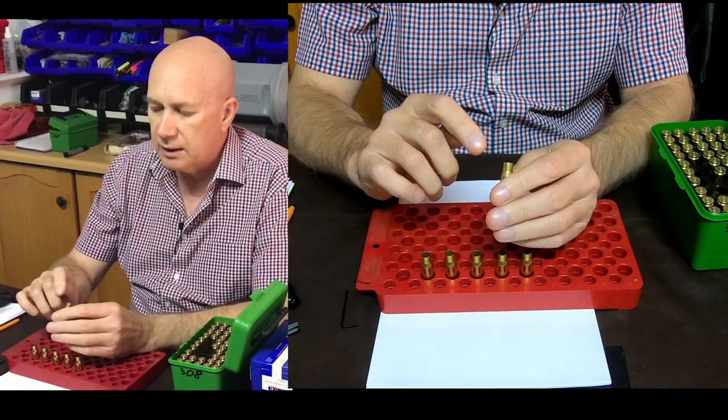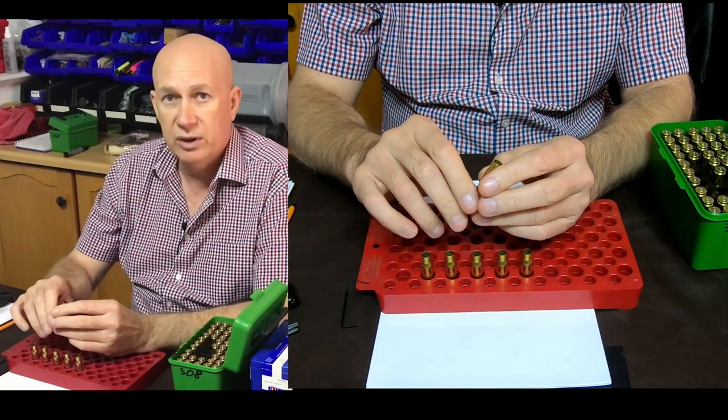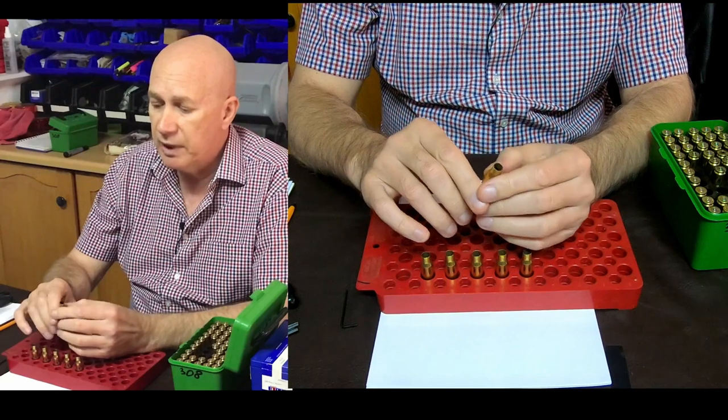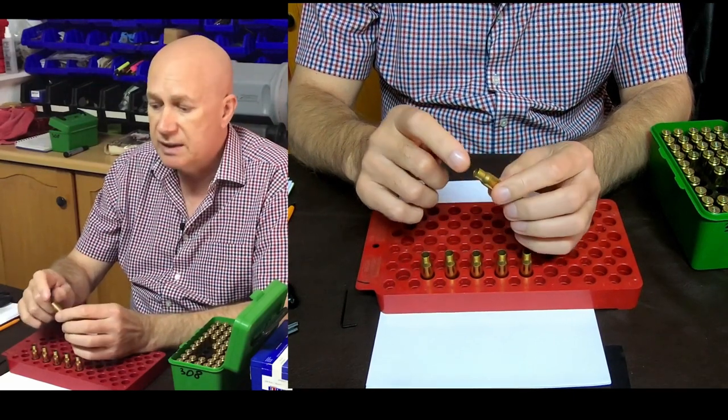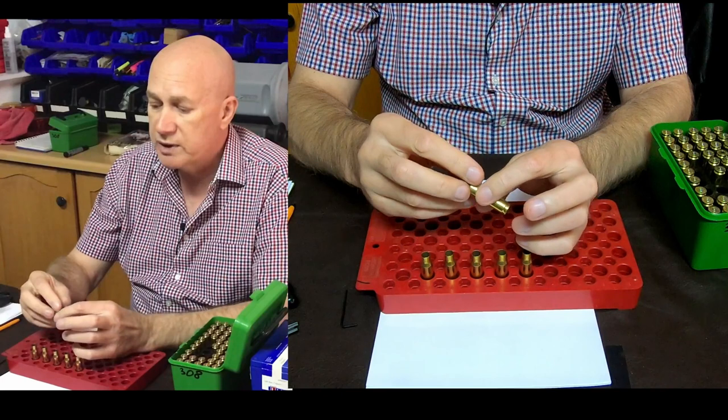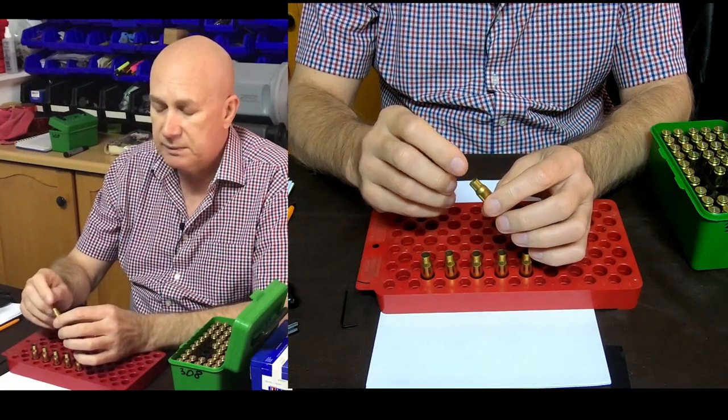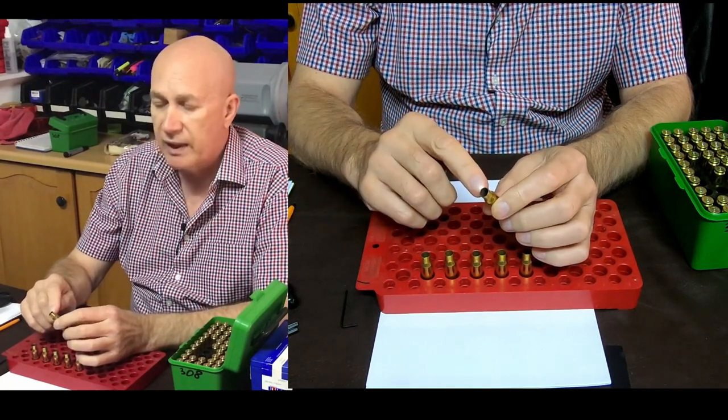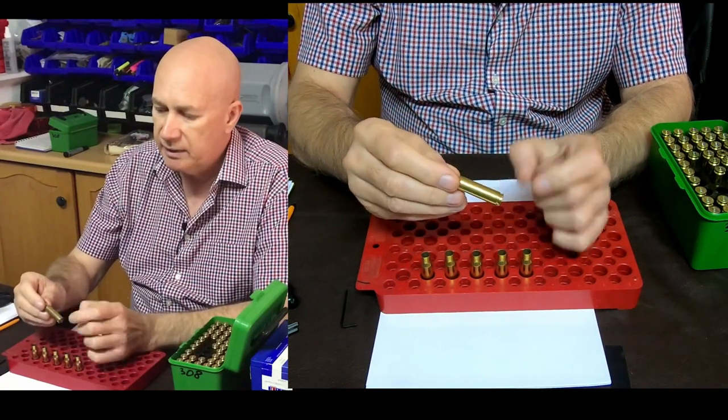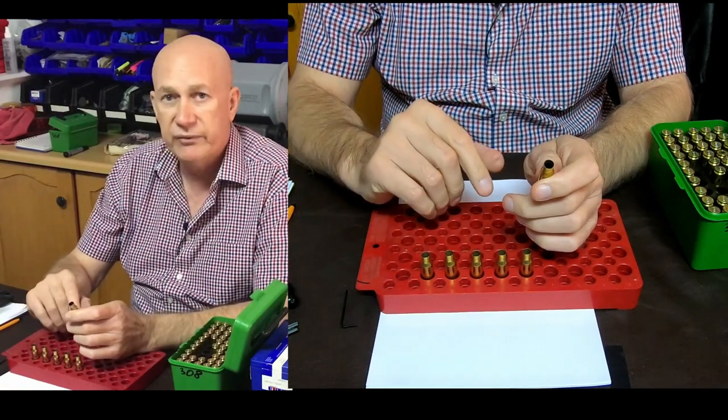Please gentlemen, don't use your neck sizing or your full length sizing die to press the primer out. Inside of these cases there's carbon, and carbon is very hard. It falls on the Mohs scale at the same hardness as a diamond. So you can imagine what all that carbon inside here will do to your hardened button or die. It will damage it, and the carbon on the outside will damage the inside of your die. You will eventually get scratches that are transferred onto your brass.